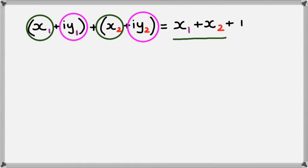Now we add these two together. So we're going to get iy1 plus iy2, and that's your imaginary part of the complex number.